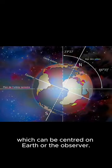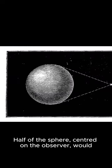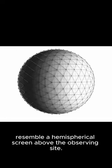The sphere can be centered on Earth or the observer. Half of the sphere centered on the observer would resemble a hemispherical screen above the observing site.